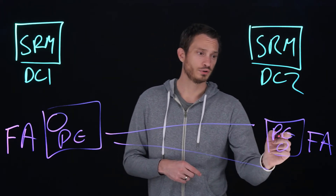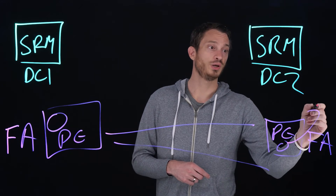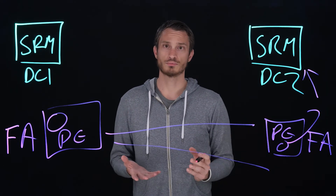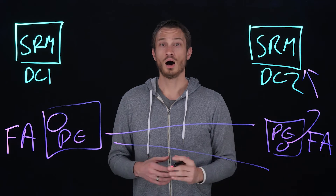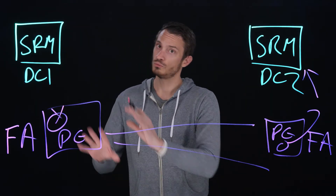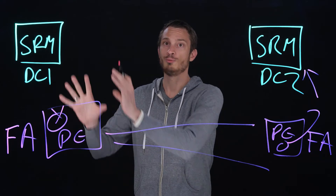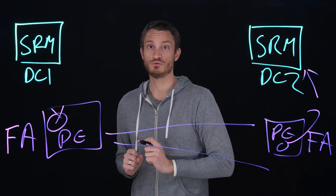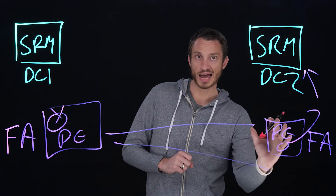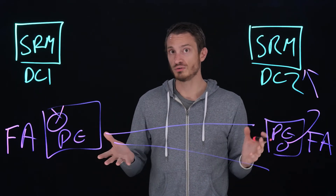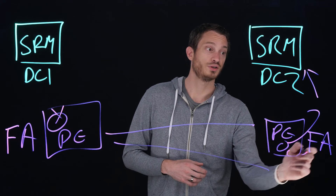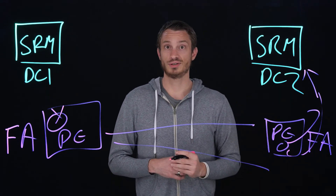During the test failover, it'll create a temporary copy, bring it up to your VMware environment and present it. On an actual failover, it will take this volume offline — it won't delete it, but it'll protect it on the array and remove it from the hosts. Then it'll bring up that last point in time, or it'll synchronize it if the sites are online and bring this up in a similar fashion as the test.